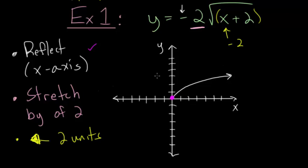After the reflection and stretch, we shift the origin 2 units to the left, landing it at negative 2 comma 0 — that's our new boundary point, marked in green as part of this graph. For the point (1,1): reflecting about the x-axis brings it to (1, -1), stretching by 2 doubles the y value to -2, and shifting 2 left places it at (-1, -2). That point is now part of the transformed graph.